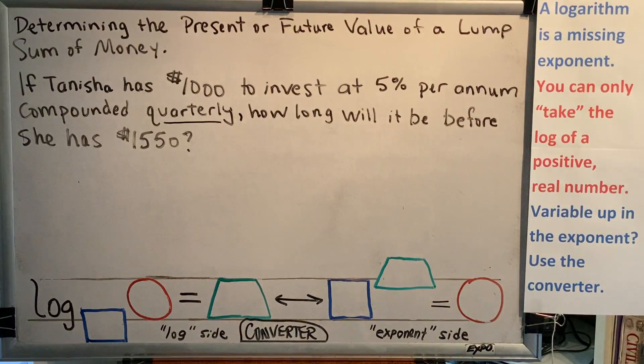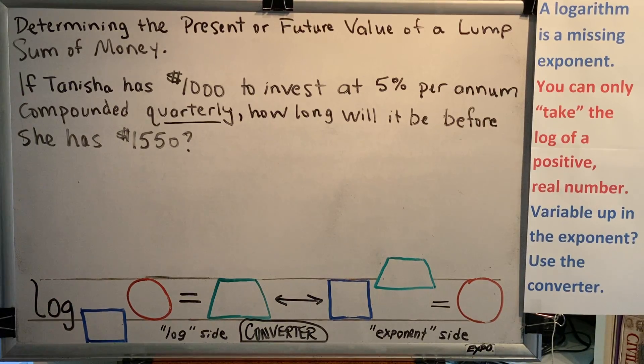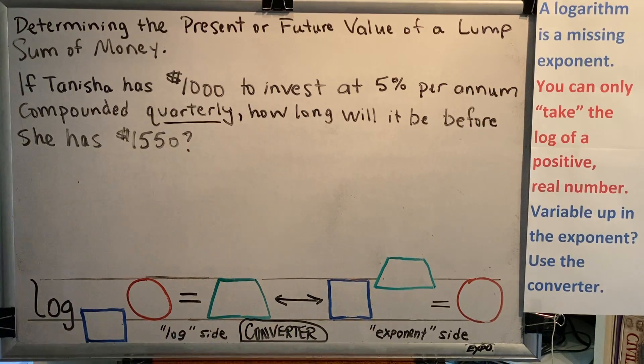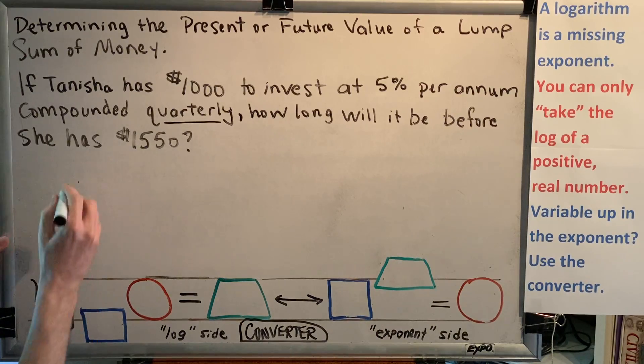We recognize that when we have a financial models type problem, the first thing we need to figure out is how is the account being compounded, because that will determine the formula that we start with. If it is being compounded continuously, we use the PERT formula, F equals PE to the RT. But if it is not being compounded continuously, for example, in this problem it's being compounded quarterly, then we use the following formula.